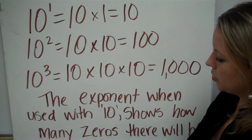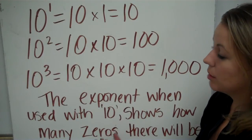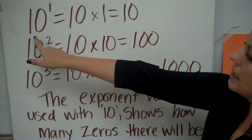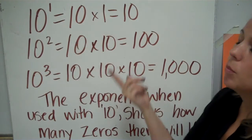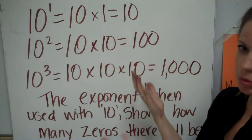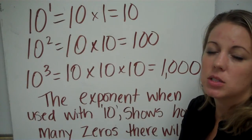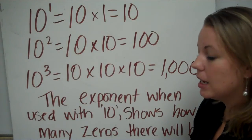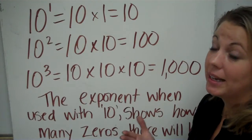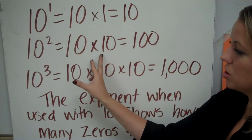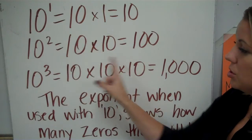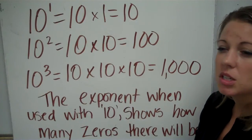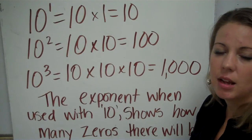Here I want to show you what the powers of ten really stand for — you can memorize these easily. Ten to the first power is just ten one time, so it's ten. Ten to the second power is ten multiplied by itself twice: ten times ten. You see how ten shows up two times? There's your two, and the number you're using is ten. Ten times ten is one hundred, so ten to the second power is one hundred.